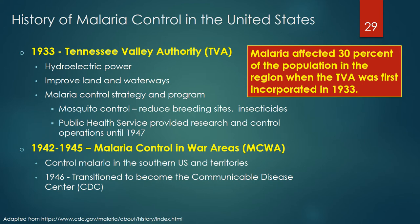President Franklin D. Roosevelt signed a bill creating the Tennessee Valley Authority (TVA) on May 18, 1933, giving the federal government oversight to develop the hydroelectric potential of the Tennessee River, improve land and waterways, and develop a malaria control strategy for the Tennessee River Valley. Malaria affected 30% of the population in the region when the TVA was incorporated in 1933. The Public Health Service played a vital role in TVA malaria research and control operations, and by 1947 the disease was essentially eliminated.